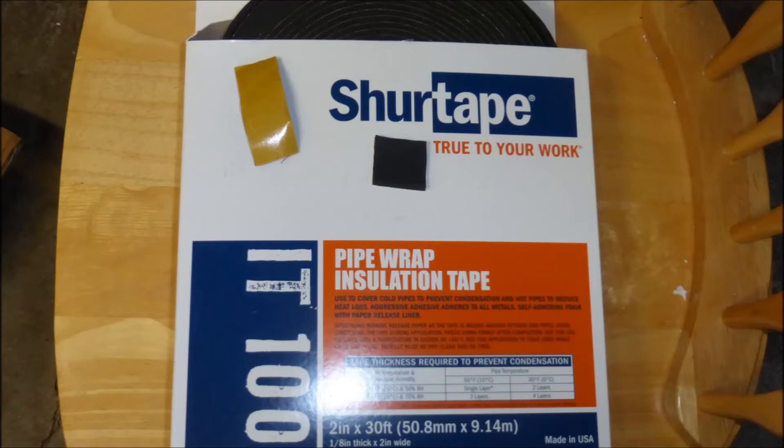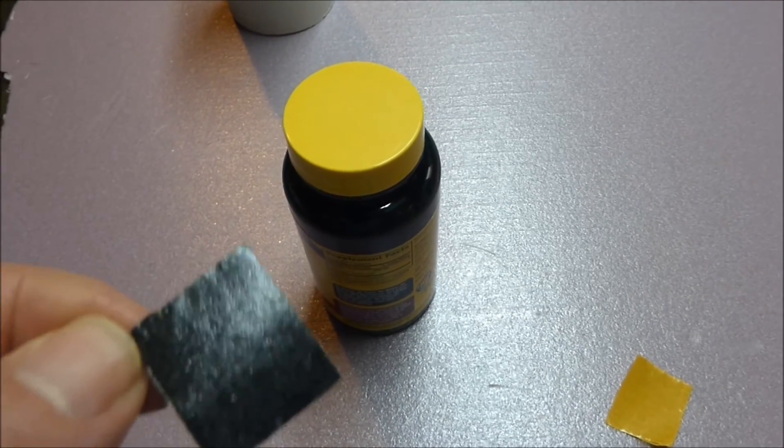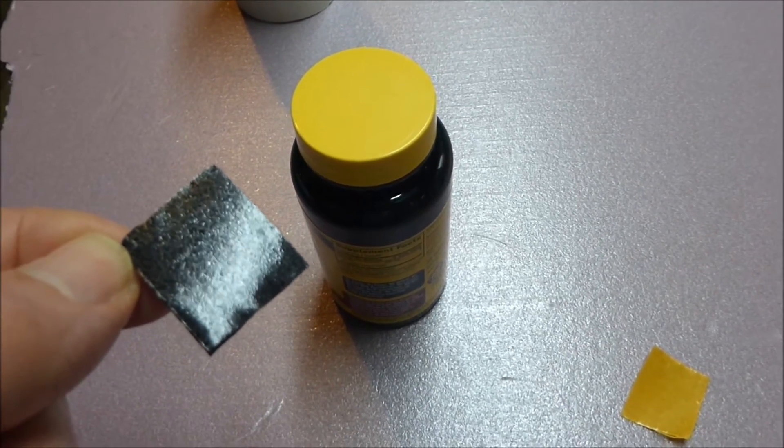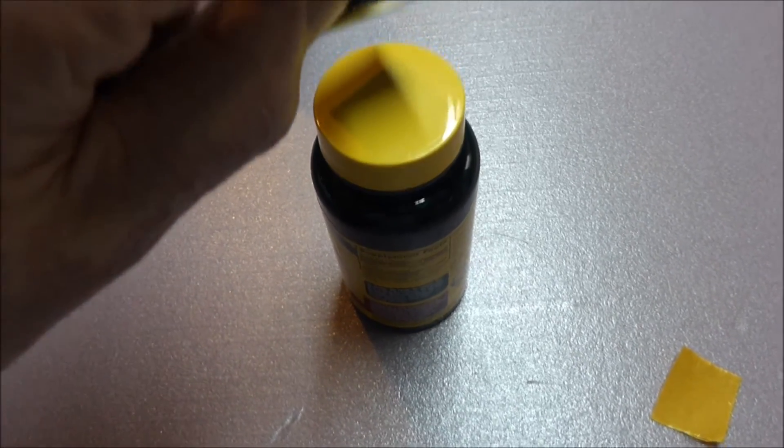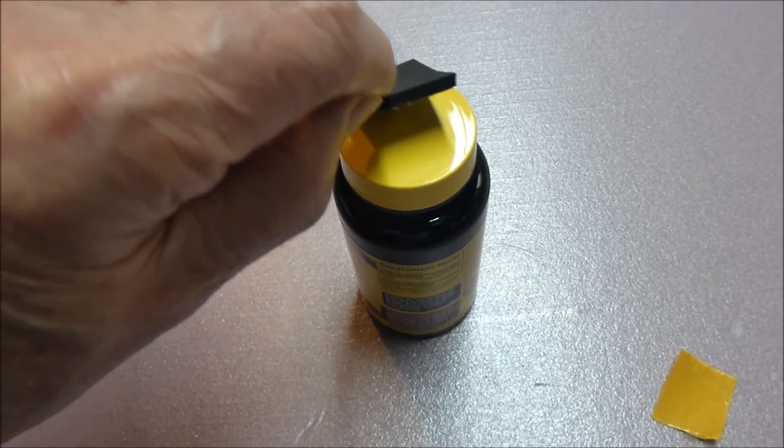SureTape IT100 1 1/8th inch thick polyethylene foam tape has a sticky side. A 1 inch square is glued to the top of the bottle cap. It weighs about a quarter of a gram.